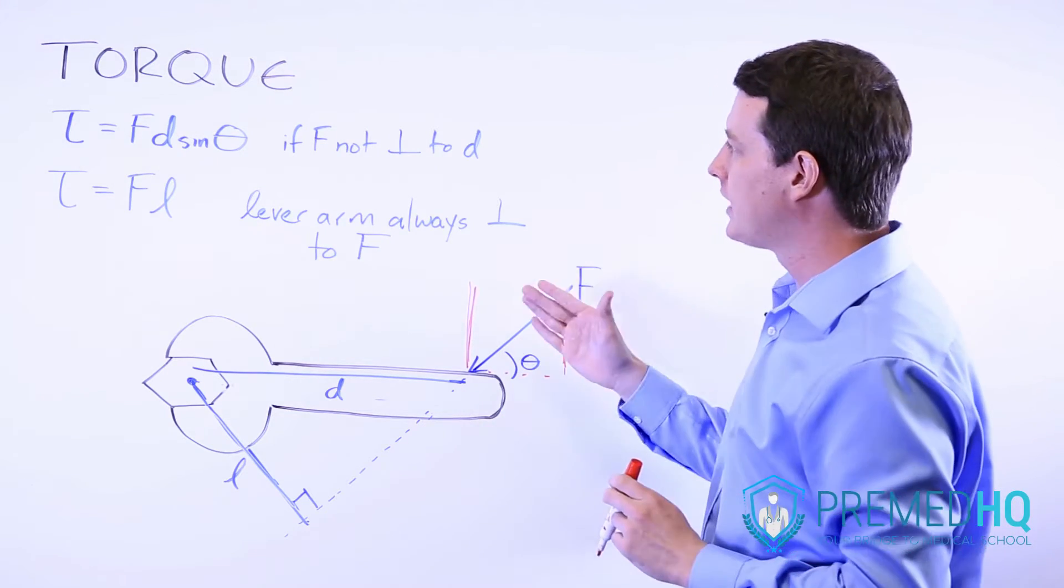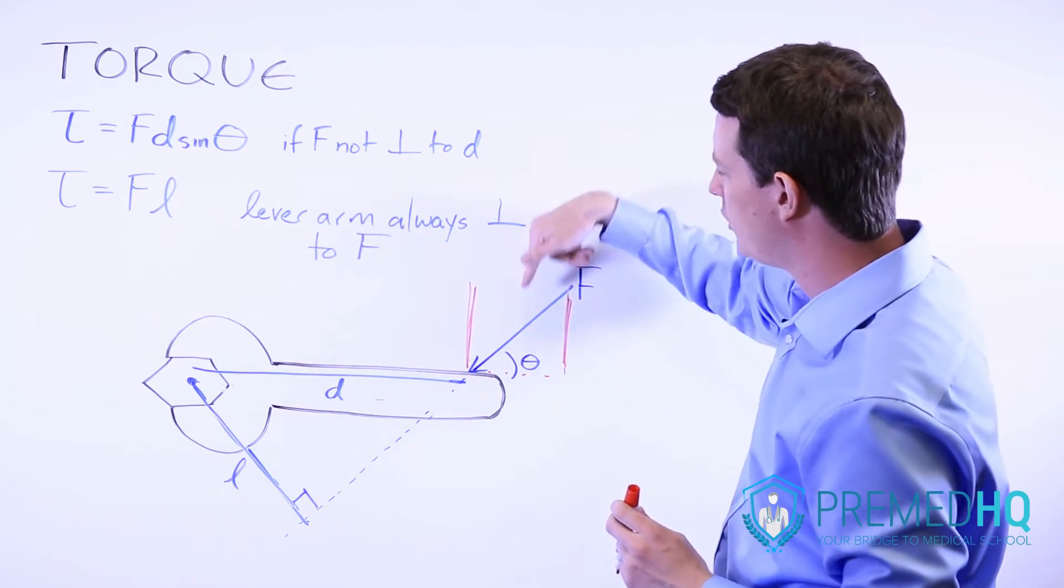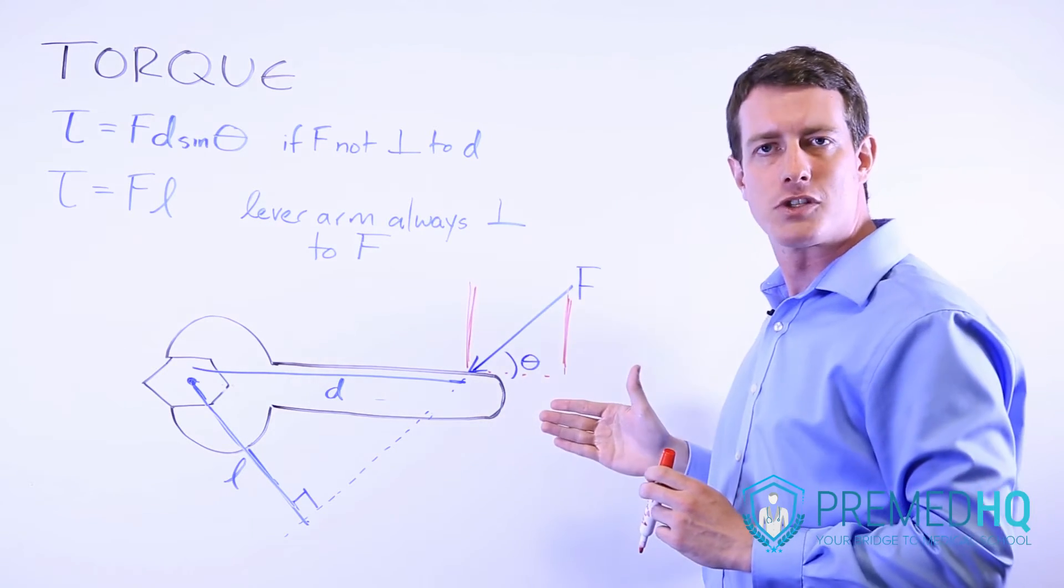In that case the sin θ is there just to correct so that you have only the vertical component of this force vector.